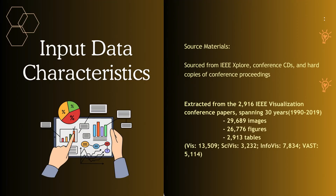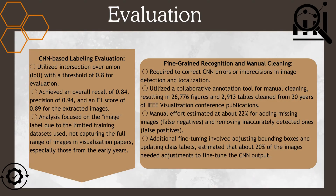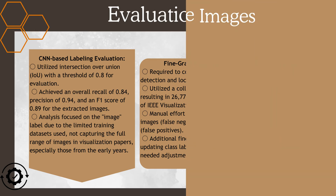The primary data for this were sourced from IEEE Explore, conference CDs, and hard copies of conference proceedings. For evaluation, they used intersection over union with a threshold of 0.8, and also F-measure metrics such as recall, precision, and F1 score for the extracted images. They also used a collaborative annotation tool for manual cleaning and additional fine-tuning for adjustments.